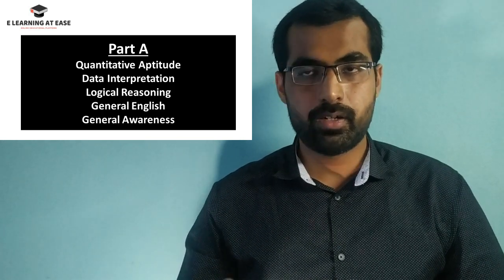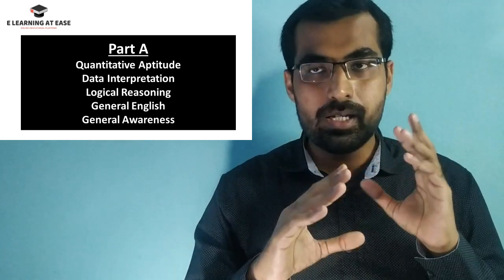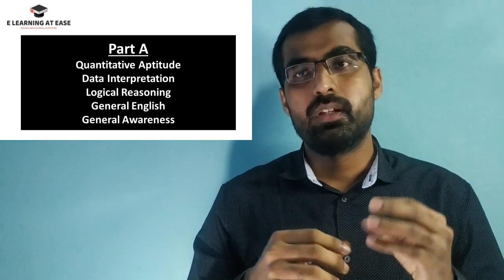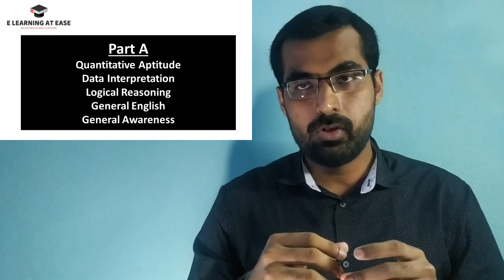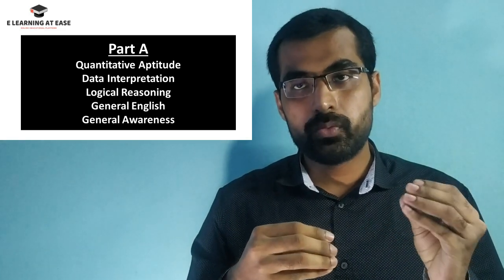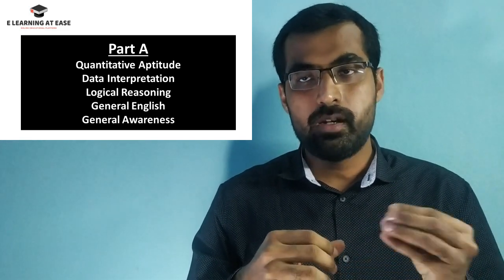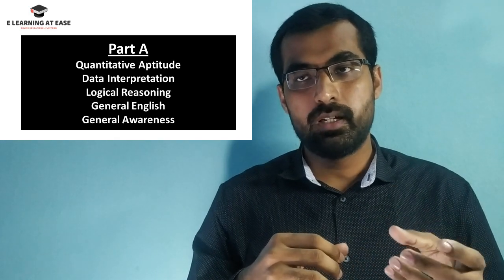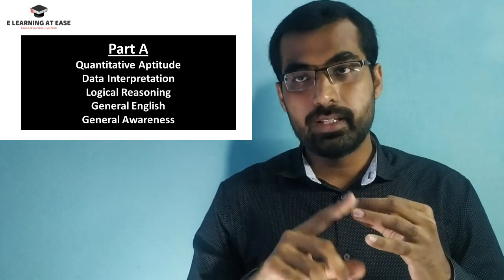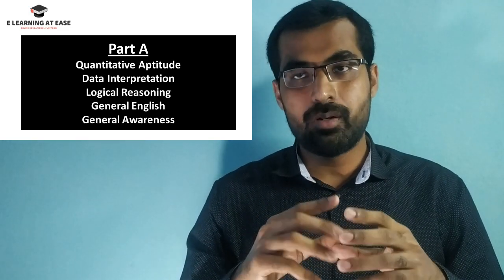Whether you have applied for mechanical, electrical, computer science, or finance, Part A will not differ. In Part A there will be 5 topics: general English, general awareness, quantitative aptitude, logical reasoning and data interpretation. You will be getting 25 questions from quantitative aptitude, data interpretation and logical reasoning, and around 15 questions from general English and general awareness. So you should focus more on quantitative aptitude, logical reasoning and data interpretation.